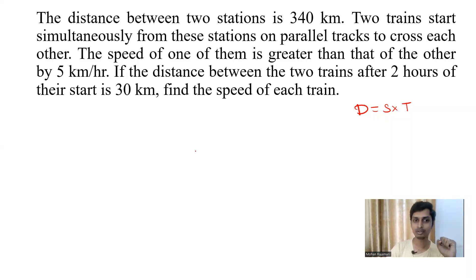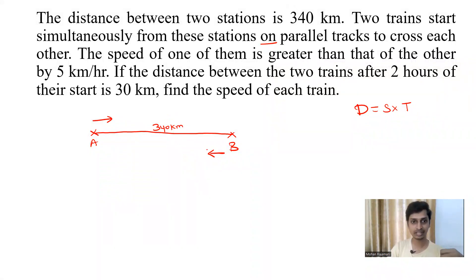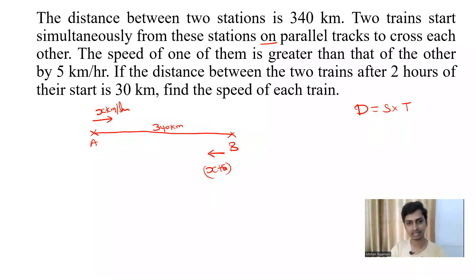What is given in the question? We have two stations — let's name them A and B. The distance between A and B is 340 km. Two trains start simultaneously: one from A and one from B, traveling towards each other. The speed of one is greater than the other by 5 km per hour, so we keep the speed of the first train as x km/hr and the second train as x plus 5 km/hr.